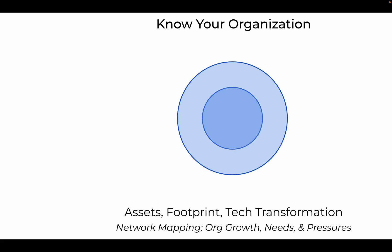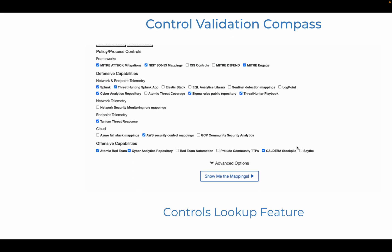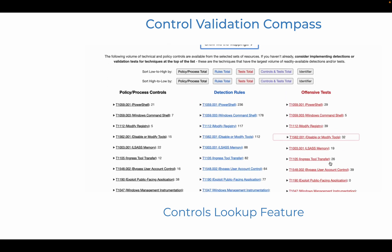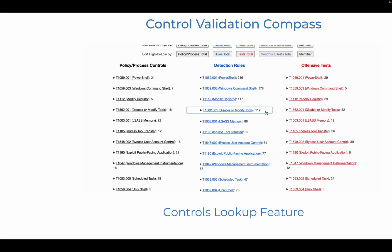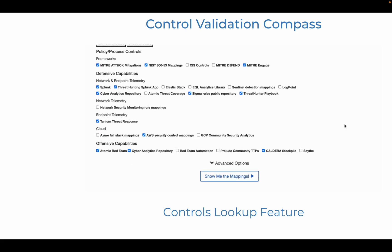Finally, security teams should understand which security controls exist in their environment and their organization's capabilities for collecting the data or event logs needed for those controls to function as expected. This typically involves knowing which security tools and technologies are in place, as well as what security and response processes exist and what policies govern them. The Control Validation Compass controls lookup feature can save significant time, enabling any team to get an initial sense of the policy and technical controls, detection rules, and red team capabilities possibly in use.